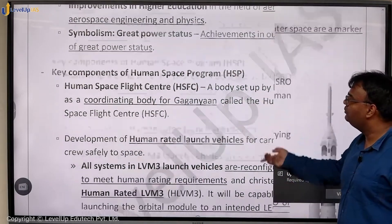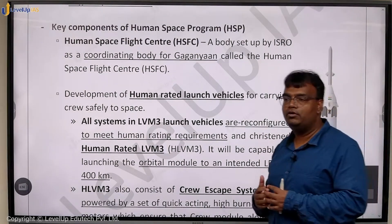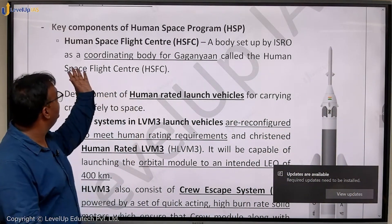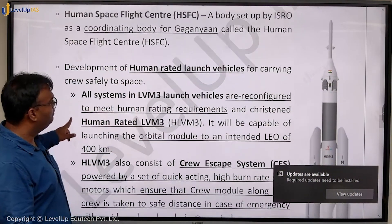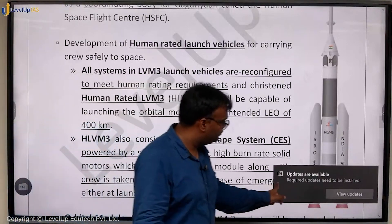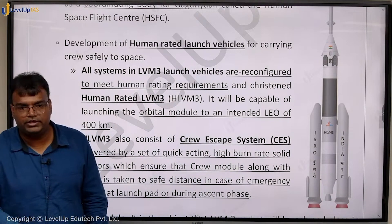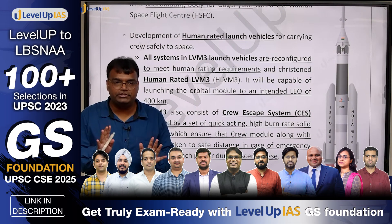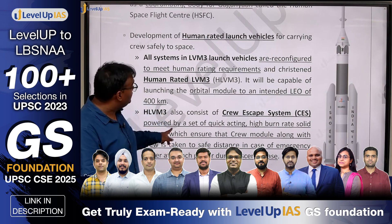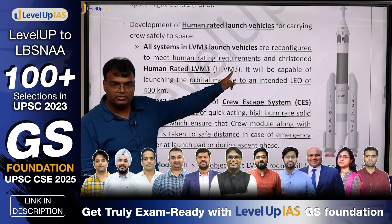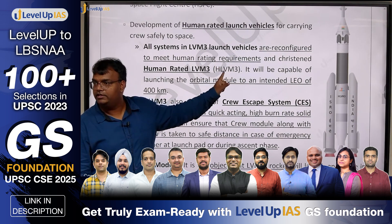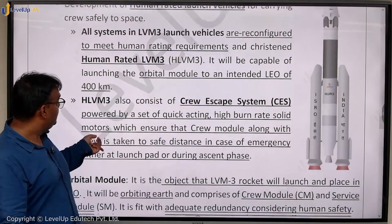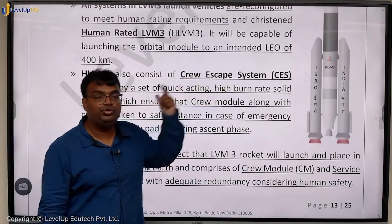Now, key components of human space flight. First, the Human Space Flight Centre was established in Bangalore. Our LVM 3 launch vehicle was human-rated — its various components were tested and modified to be safe for sending humans to space, and it is now called HLVM 3. The version used for launching Gaganyaan is Human Rated LVM 3 — HLVM 3. It also consists of what is known as the Crew Escape System.